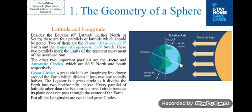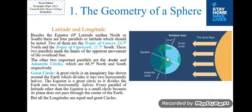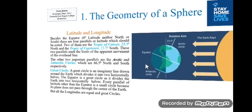Now, the great circle. A great circle is an imaginary line drawn around the Earth which divides the Earth into two equal halves — the northern hemisphere and the southern hemisphere. 'Hemi' means half. The equator is a great circle as it divides the Earth into two equal horizontal halves. Every parallel of latitude other than the equator is a small circle because its plane does not pass through the center of the Earth. But all the longitudes are equal and are great circles.